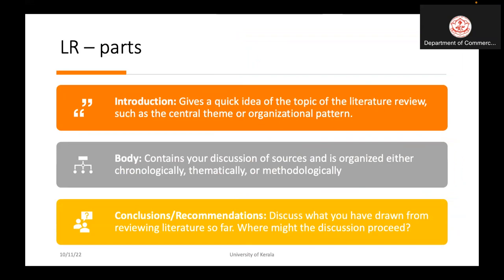A literature review consists of thematic literature with three main parts. The introduction gives a good idea of the topic, the central theme or organization pattern, shows the themes identified, and provides a brief overview of the contents. In the body, you can review existing theories thematically, methodologically, or chronologically. In the conclusion, you summarize the literature, provide further discussion, and identify the research gap.